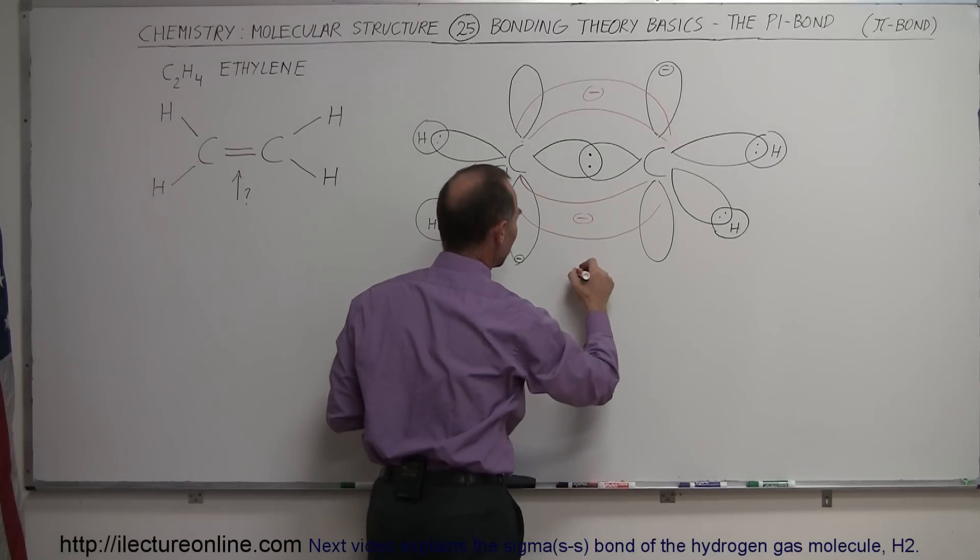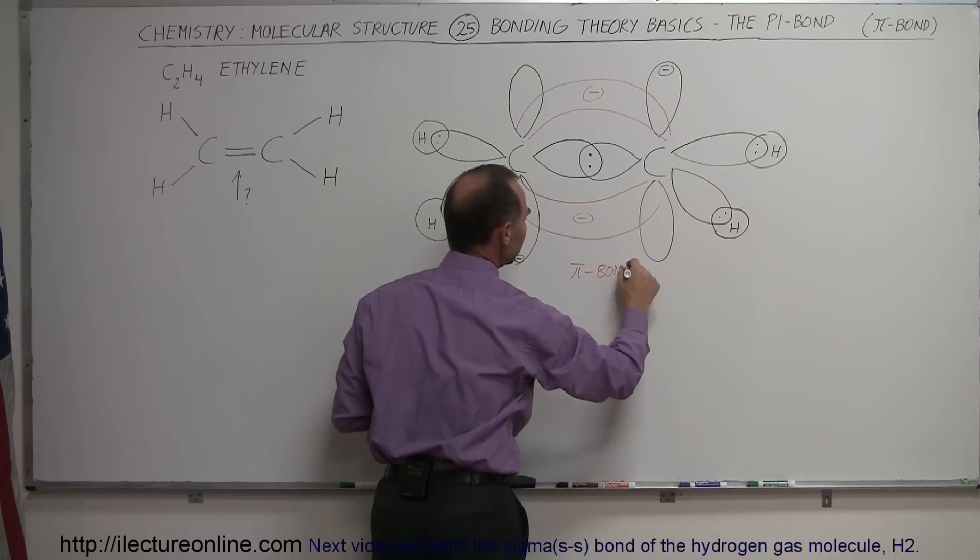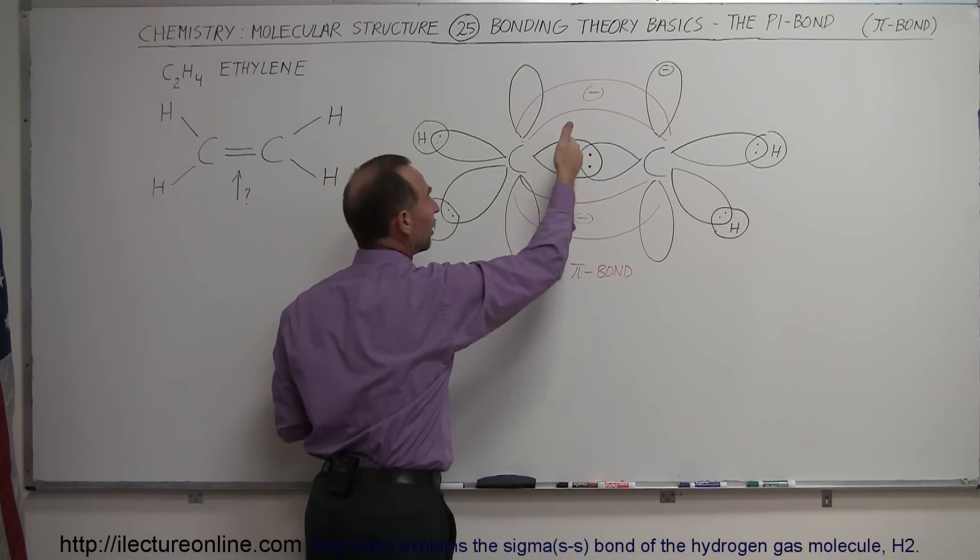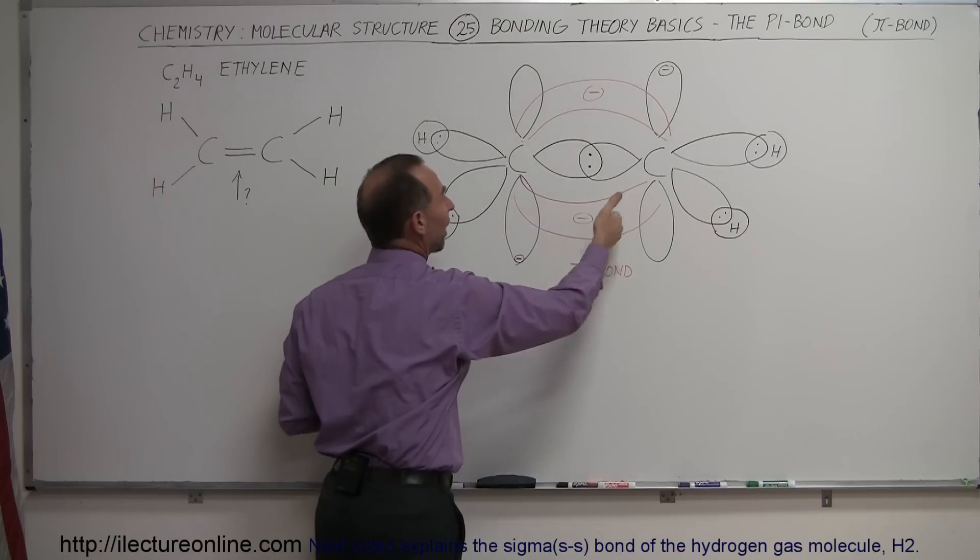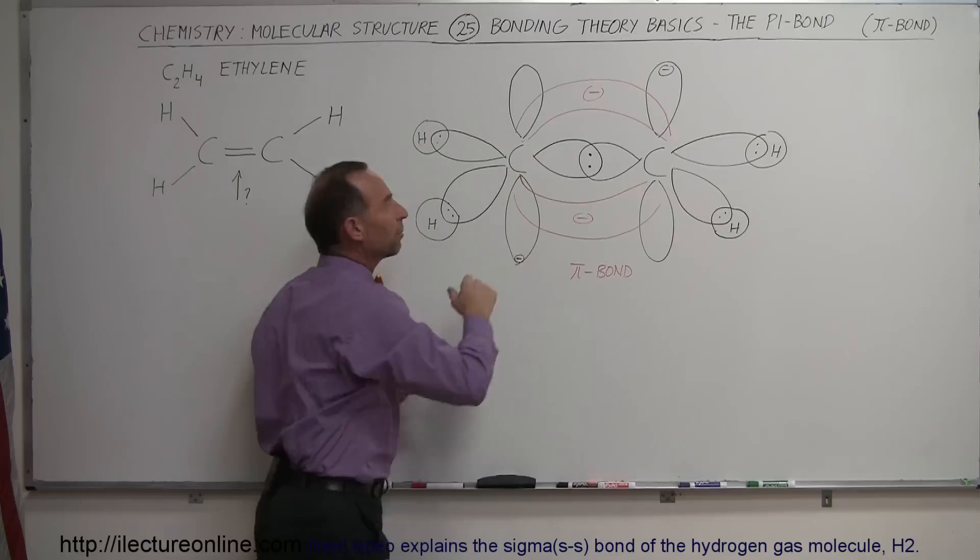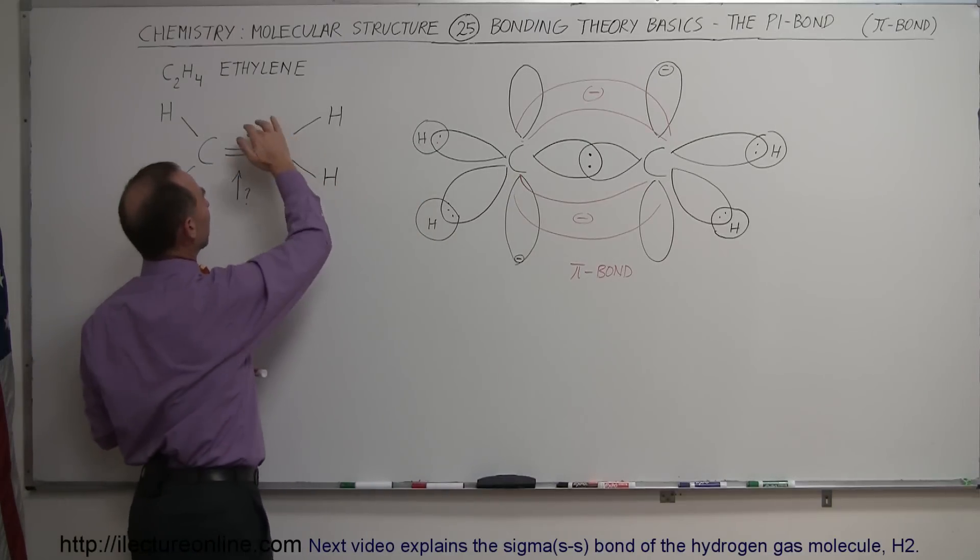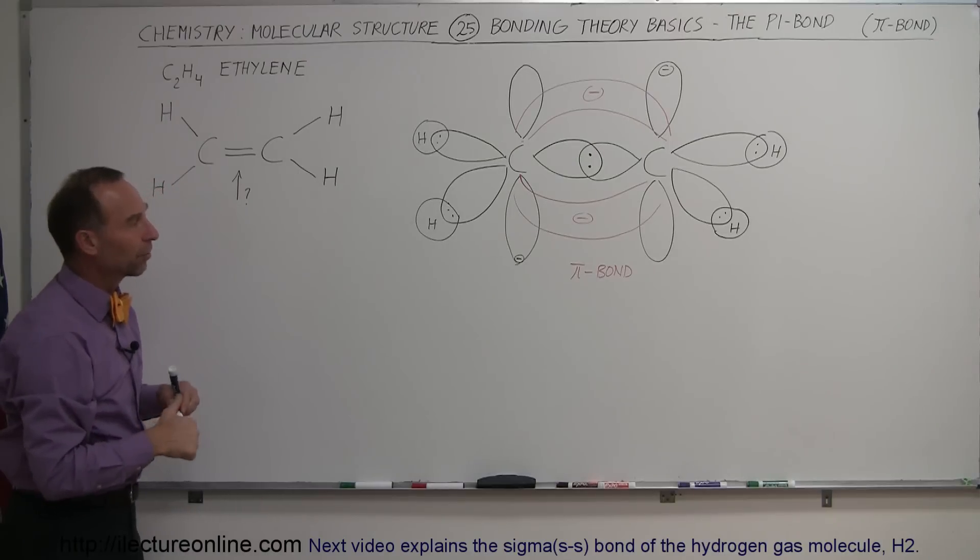So this is known as the pi bond structure. And it does contain now two electrons. And this bond is not as strong as the sigma bond, but nevertheless, it's a better situation than having these two free electrons sit in there by themselves, not forming that second bond.